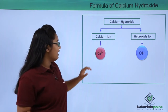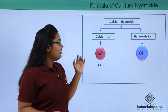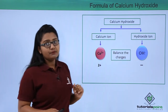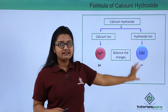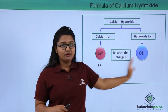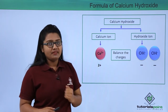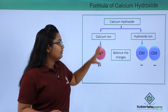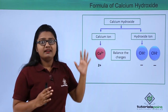Calcium ion is Ca²⁺ and hydroxide ion is OH⁻. We can see that calcium has a charge of 2+ and hydroxide has a charge of 1−. Now we need to balance the charges. We can increase the number of calcium ions or hydroxide ions to do so. Since calcium is 2+, we need 2− on the other side, so we add one more hydroxide ion, giving a total negative charge of 2−, which balances the charges equally.